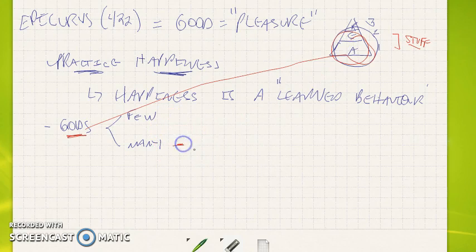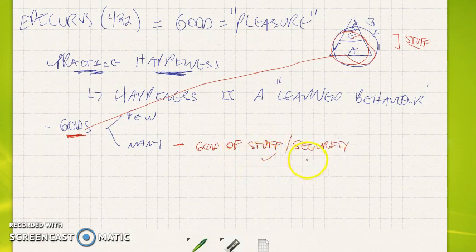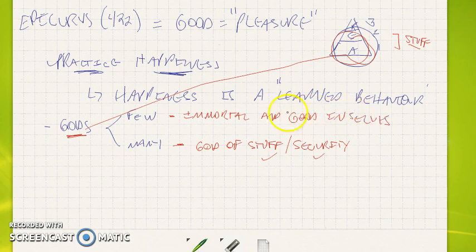So that would mean that even the way they understand God is going to be related to appetite and emotion. So the god of the many is a god of stuff or emotional security. So in other words, most people think of the gods as getting them things, or providing them with emotional security or revenge or whatever the case may be. The few understand that the gods are immortal and good in themselves.